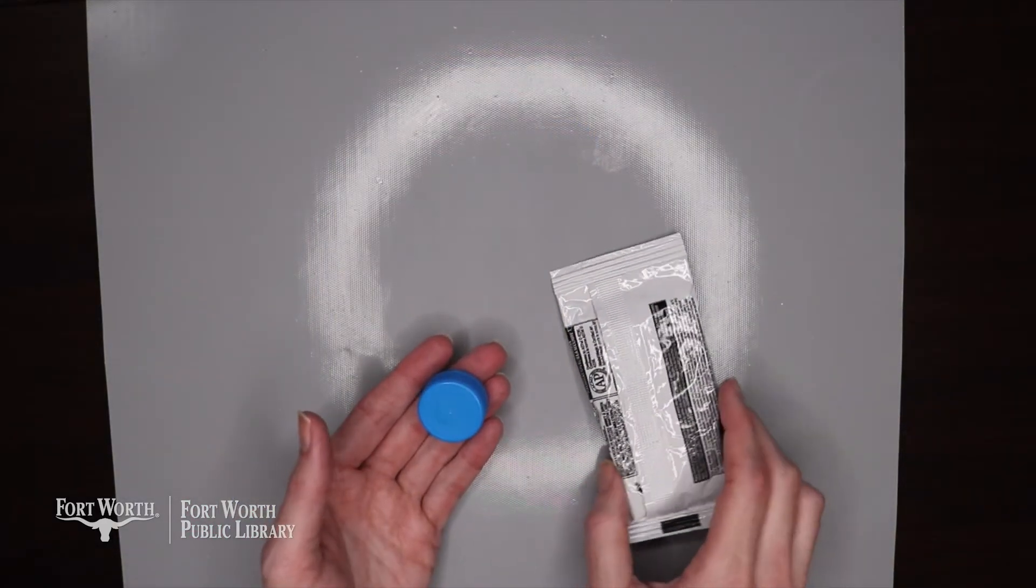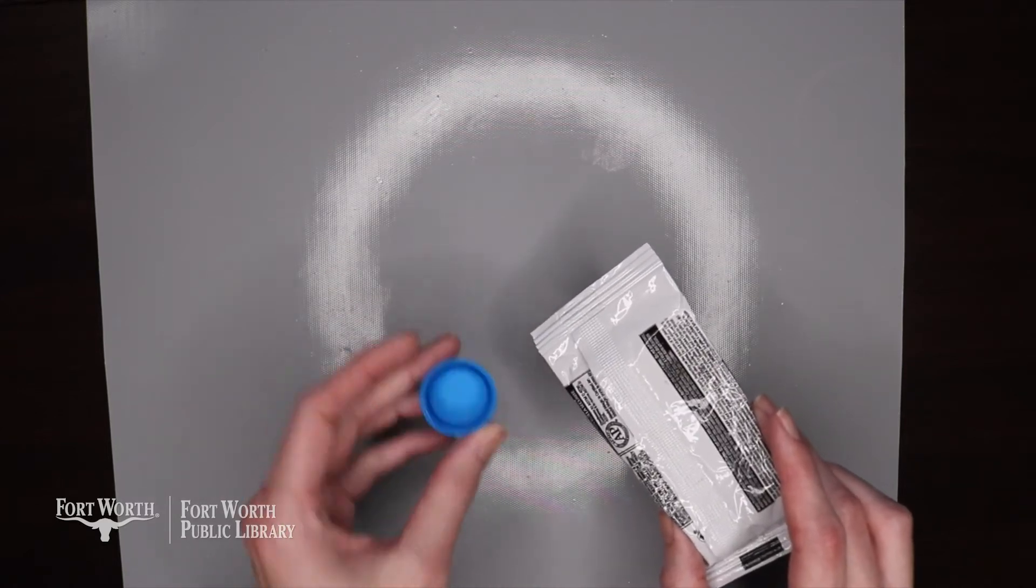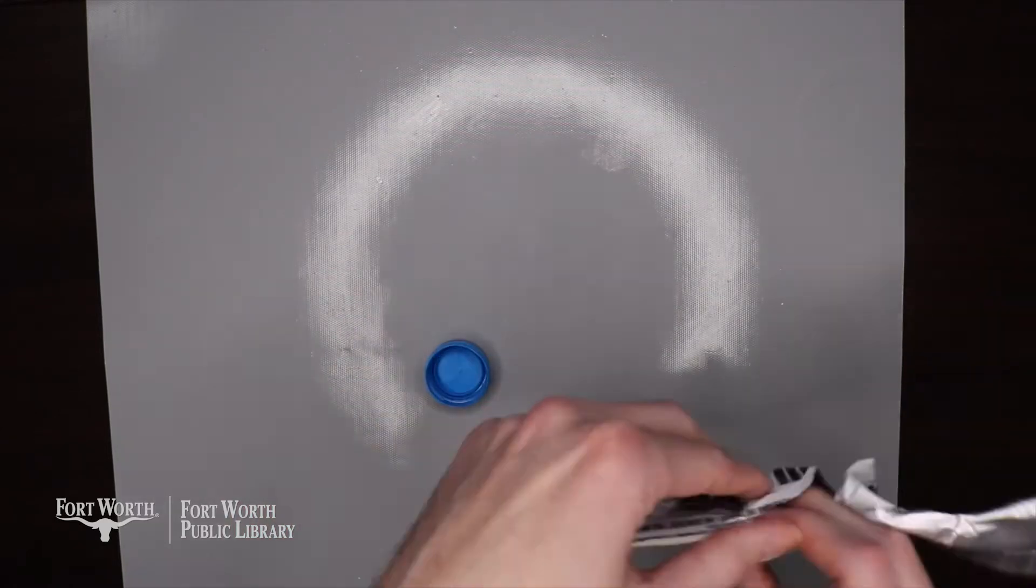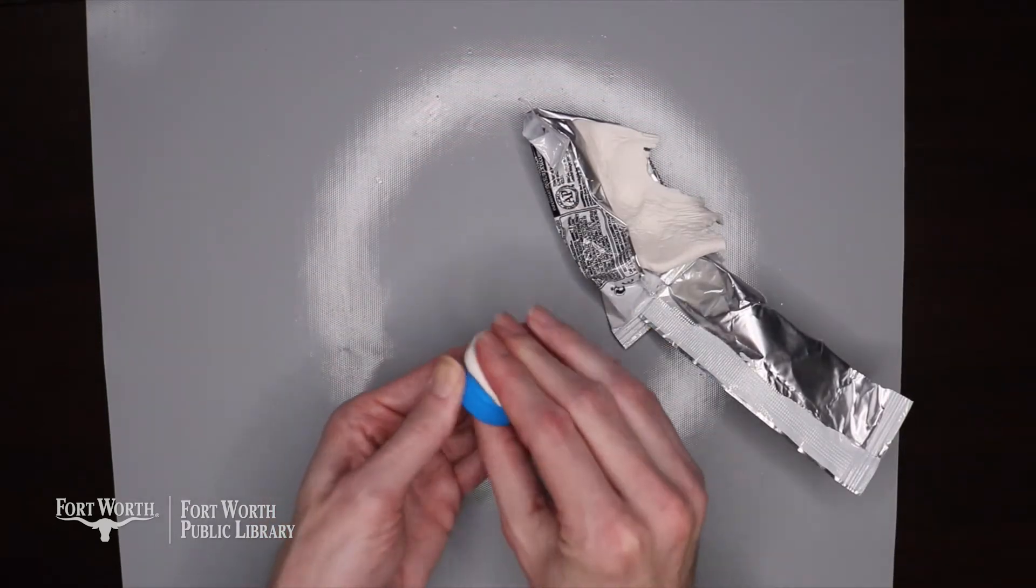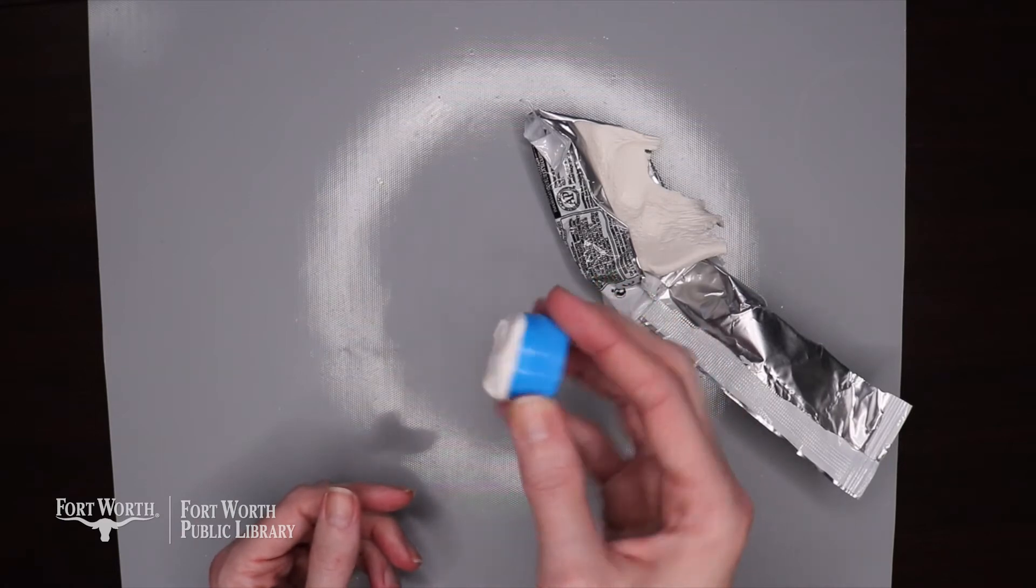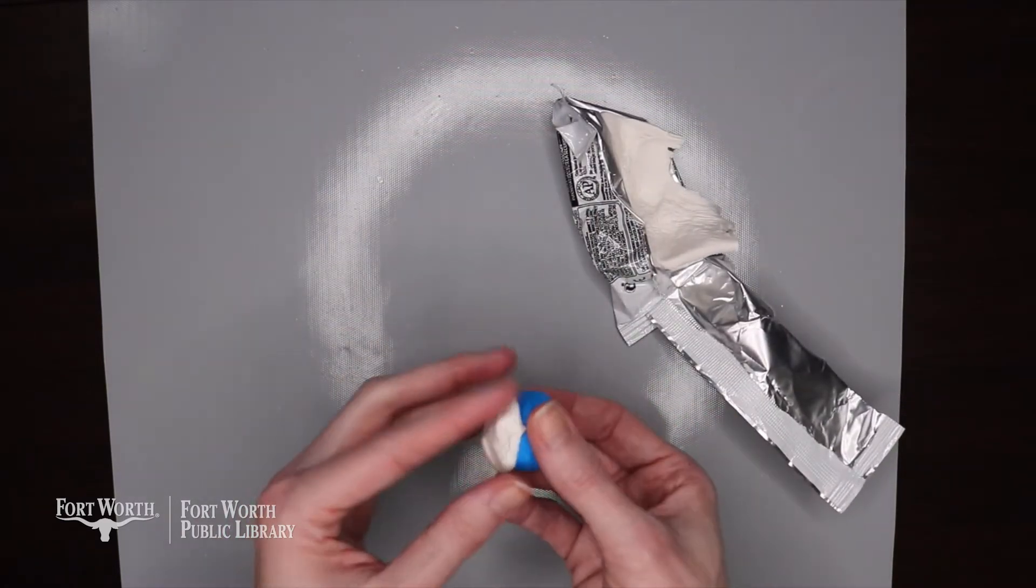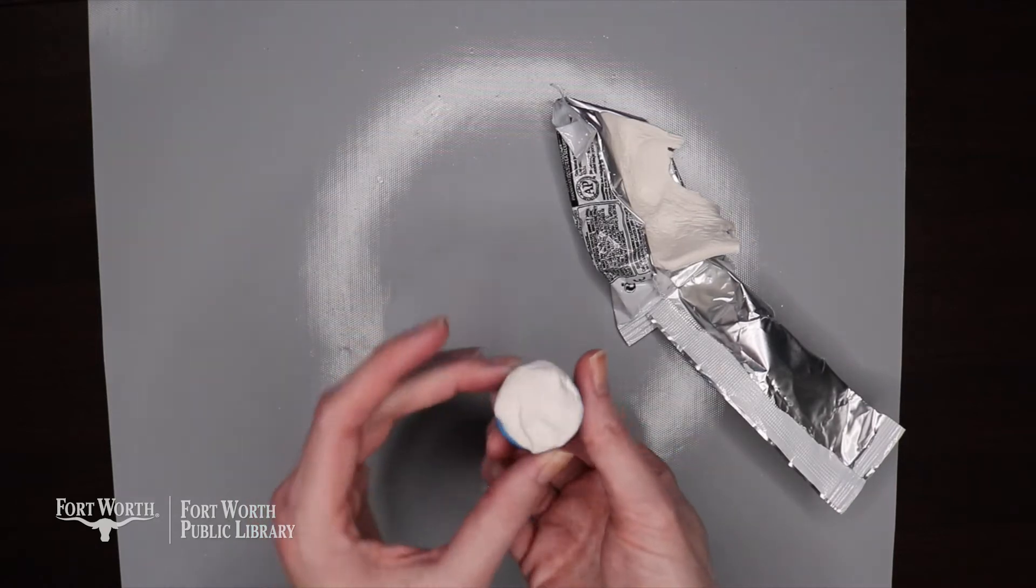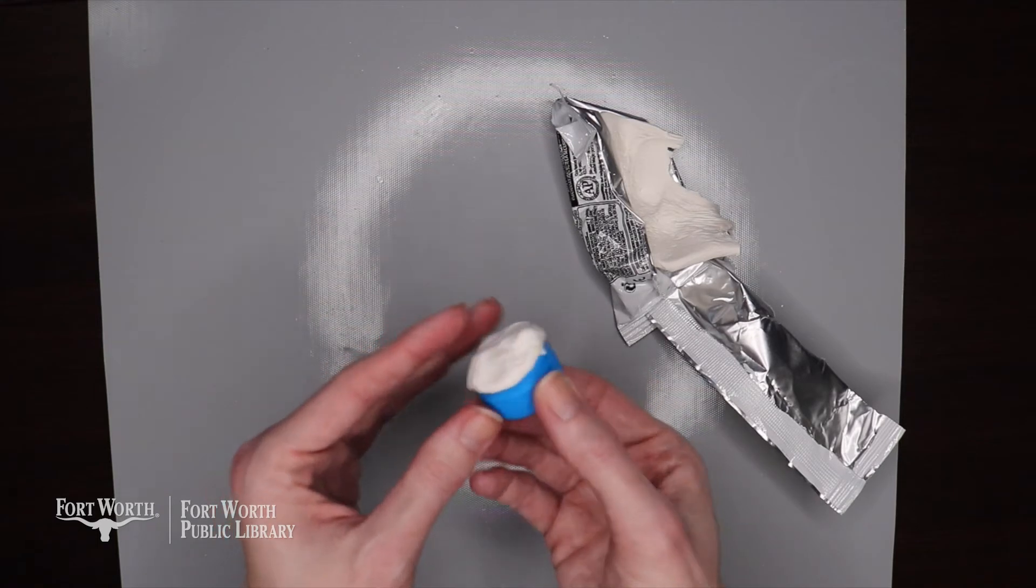The first step we're going to do is take our modeling material and fill it inside of the bottle cap. Alright, it should look something like this when you're done. You probably won't use all of your modeling material, but just enough to get the inside covered so you can stick some things into it and it will stay stabilized.